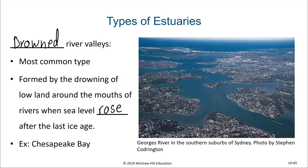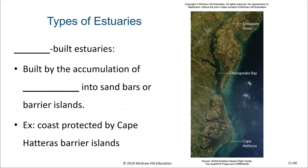The Chesapeake Bay is an example of this. Here we can also see a drowned river valley estuary from Australia in the picture. Another type of estuary are bar-built estuaries. In this case, it's a sandbar or a bar of sediments that ends up sheltering or enclosing an area where rivers are meeting the sea, built up by the accumulation of sediments into sandbars or barrier islands. The coast protected by Cape Hatteras barrier islands is an example of a bar-built estuary.